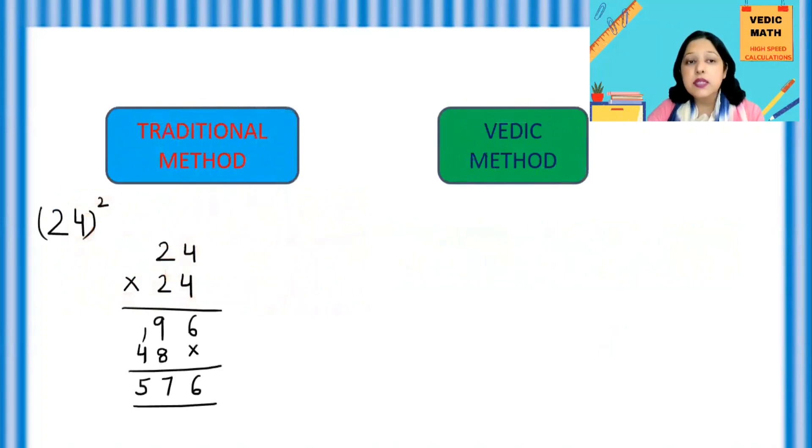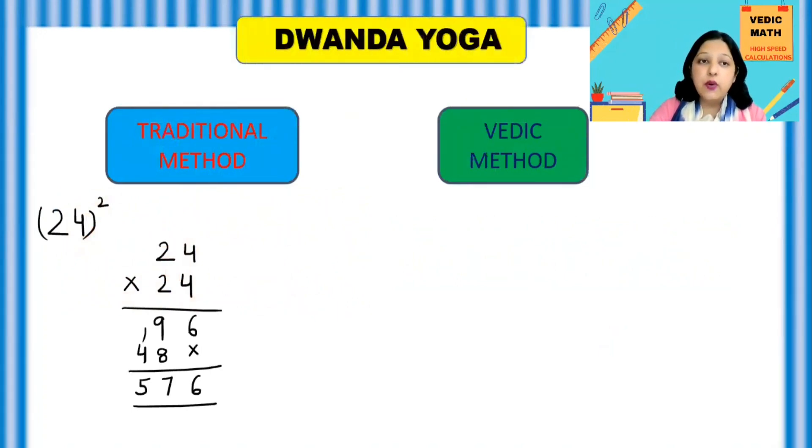So you can see it here, I have done the square of 24 with the help of our normal conventional method, traditional method which we learn in school and which is quite time consuming. Now let's do this same square with the help of Vedic method which is of only one line.